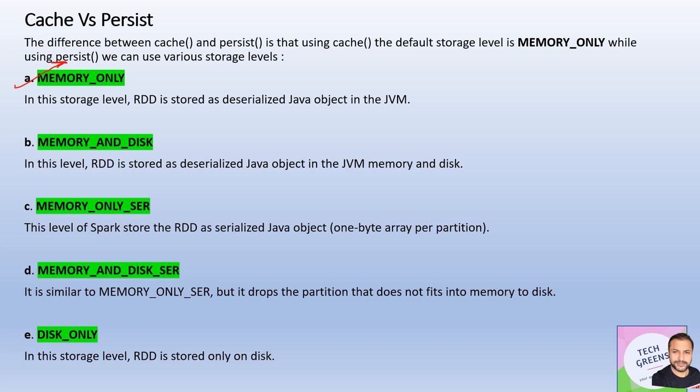When the storage level is set to MEMORY_ONLY, the object will go into your JVM heap memory. If the object doesn't fit into the allocated memory, that data will not spill onto the disk. Instead, those partitions of the data will be left out and recalculated whenever further processing or an action is called. So whatever partitions can fit into memory will be stored in the heap.